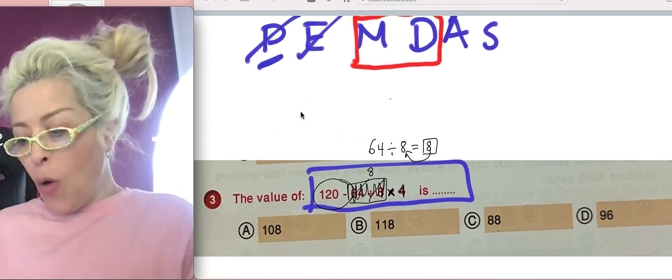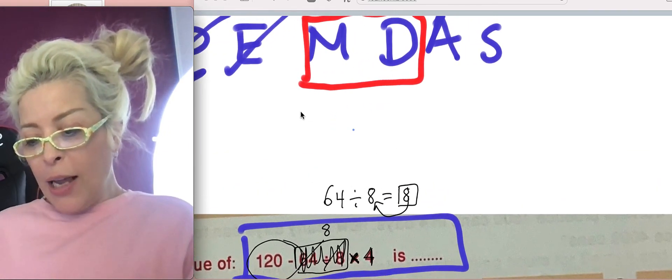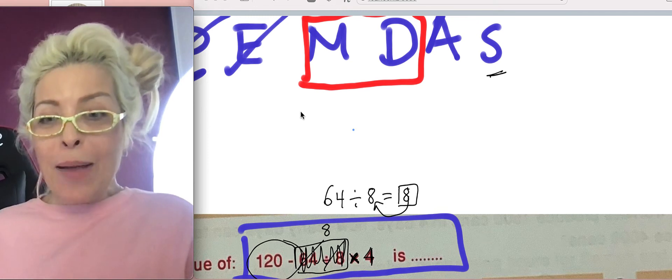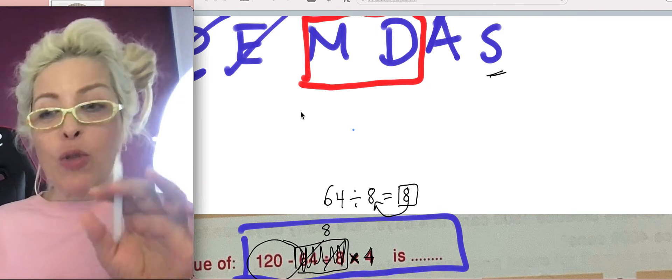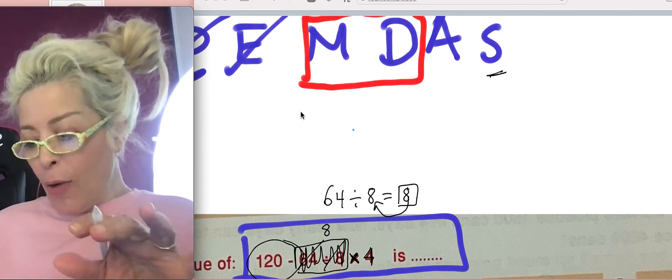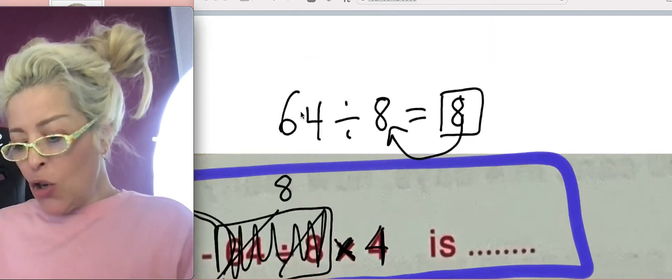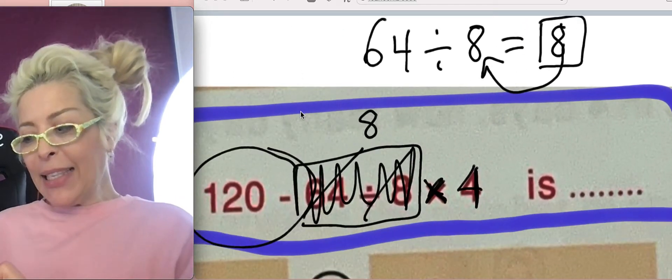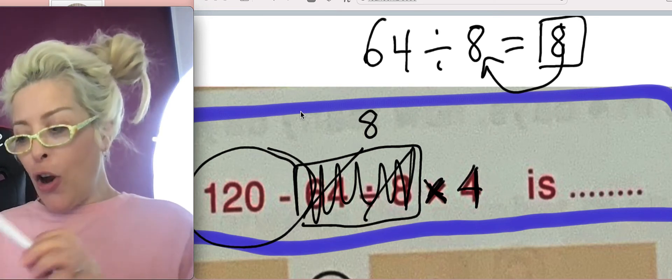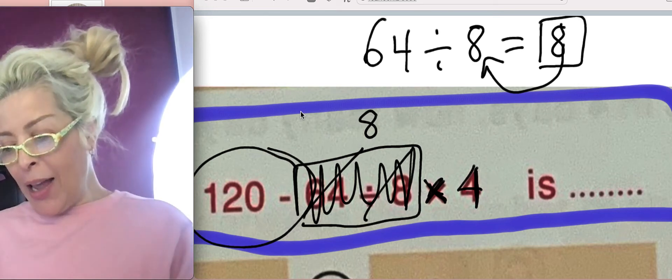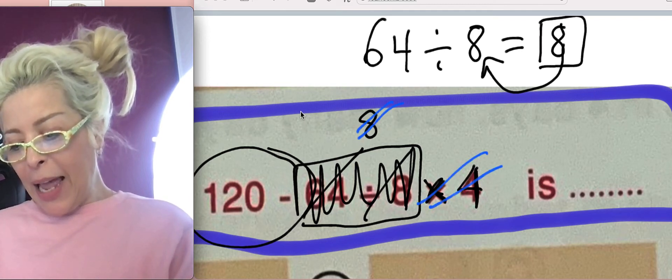We have multiplication and we also have the subtraction. Are we going to do subtraction or are we going to do the multiplication? Subtraction is last. Please excuse my dear Aunt Sara. Sara is last, which means subtraction is last, and which means that we're going to multiply before we subtract. 8 multiplied by 4 will give you 32. Now we can cross this out and get 32.